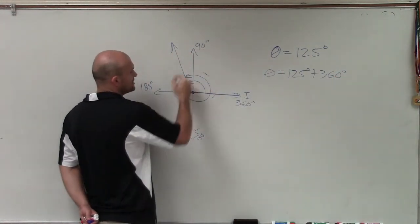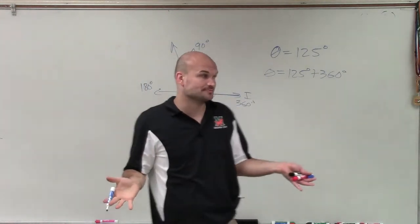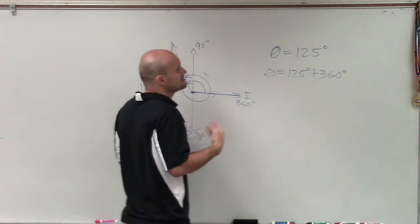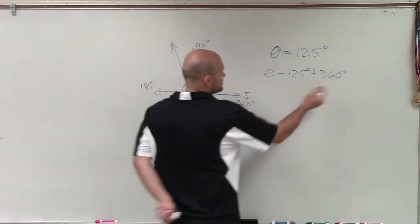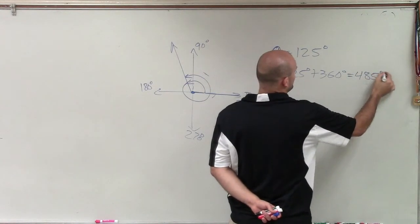If I keep on adding revolutions, well, that's just making my angle bigger and bigger and bigger. They're both coterminal. However, we want to just find the smallest positive and smallest negative. So therefore, when I add these up, I get 485 degrees.